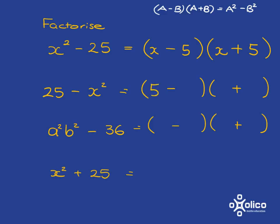So obviously what goes here is 5. And then what goes here must be, this times this must give you x squared, and so obviously it must be x.